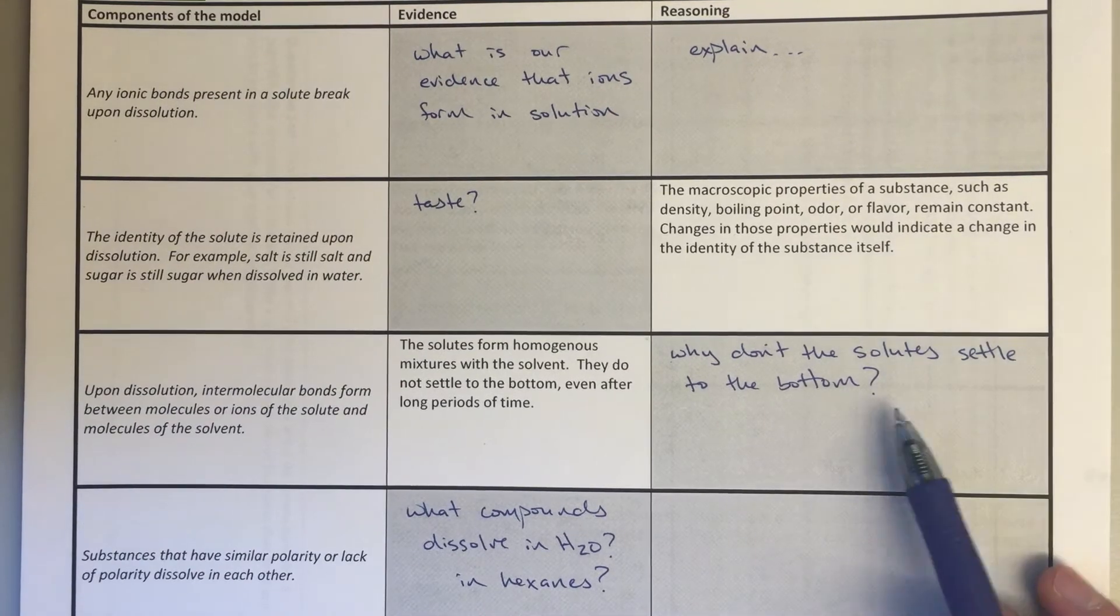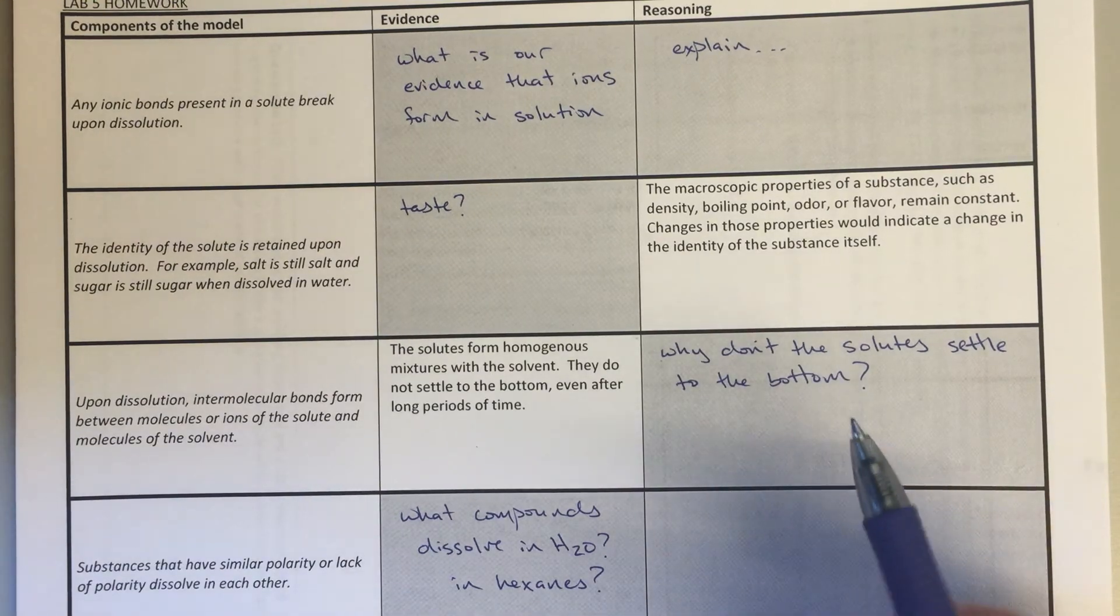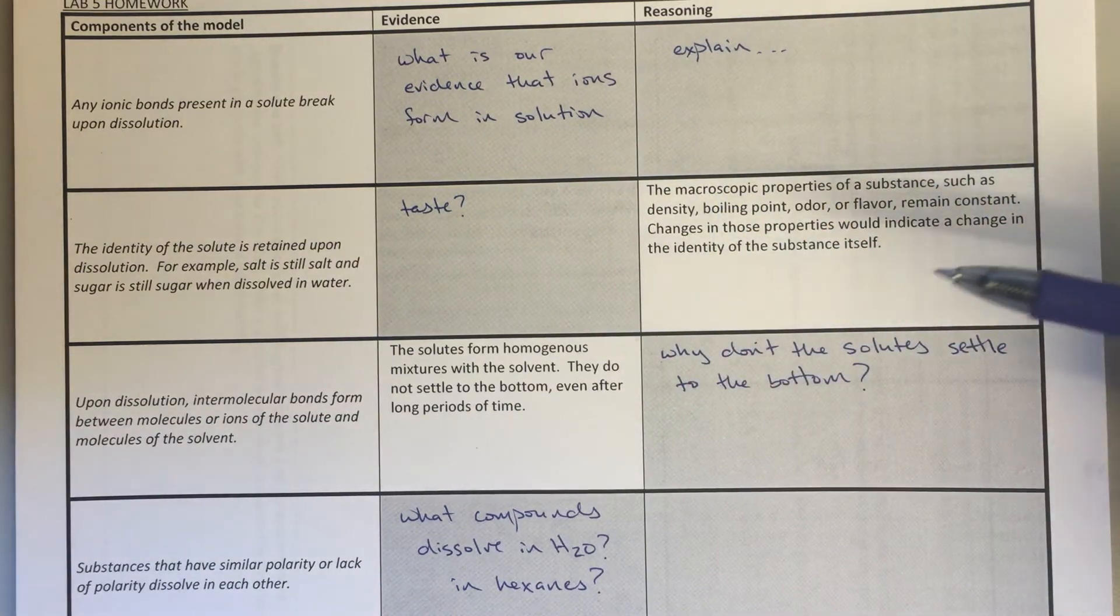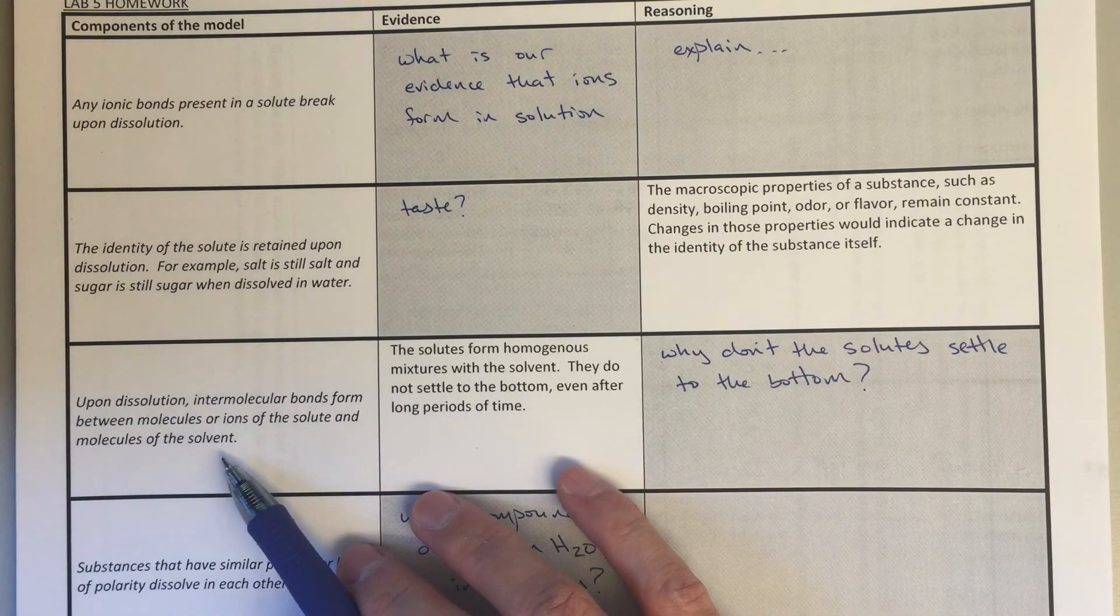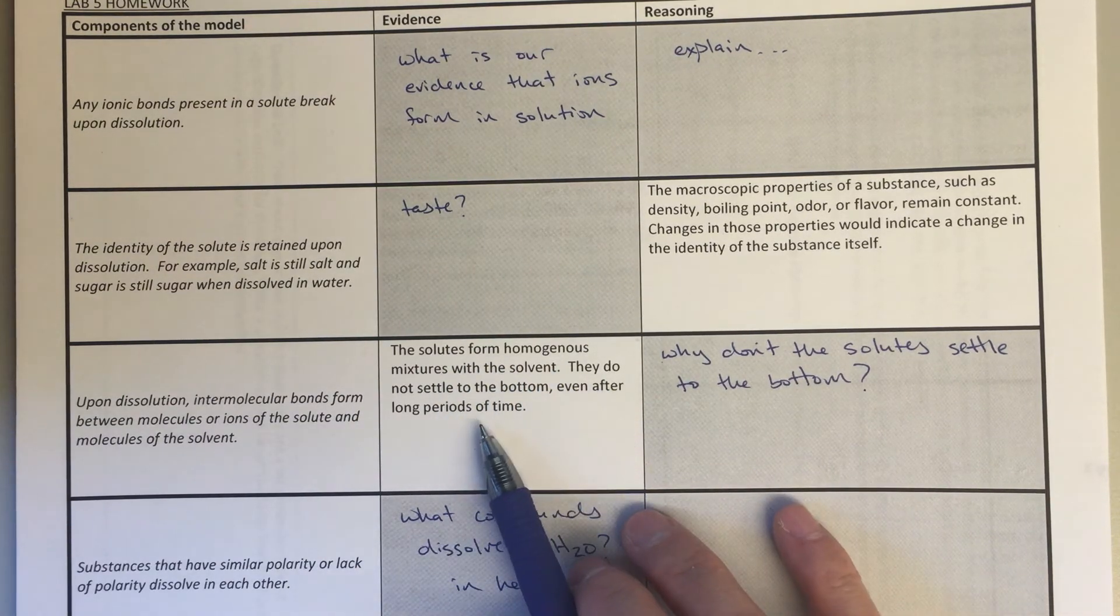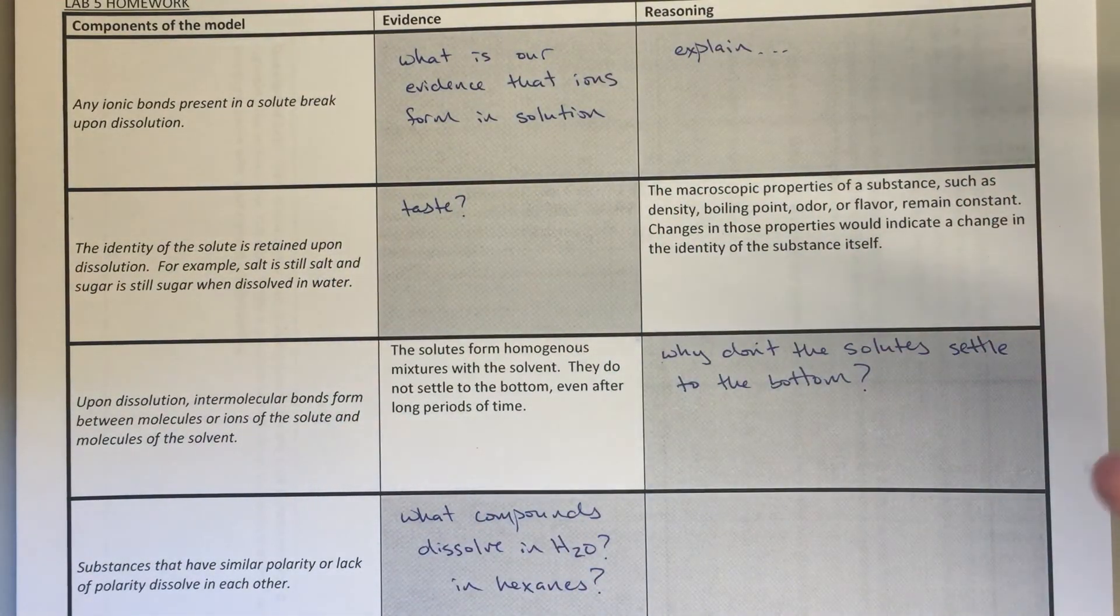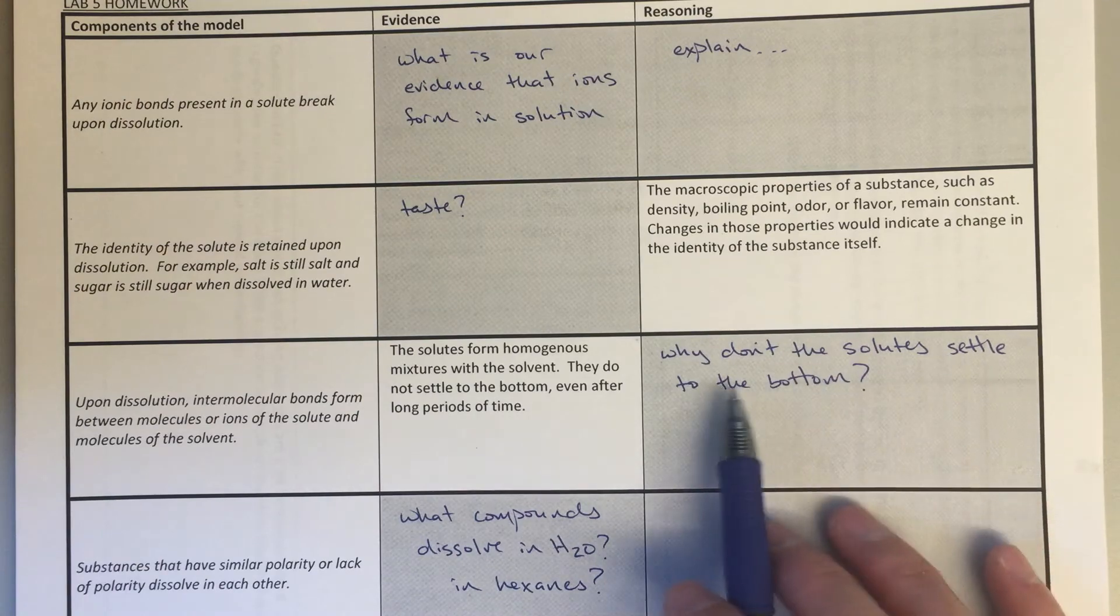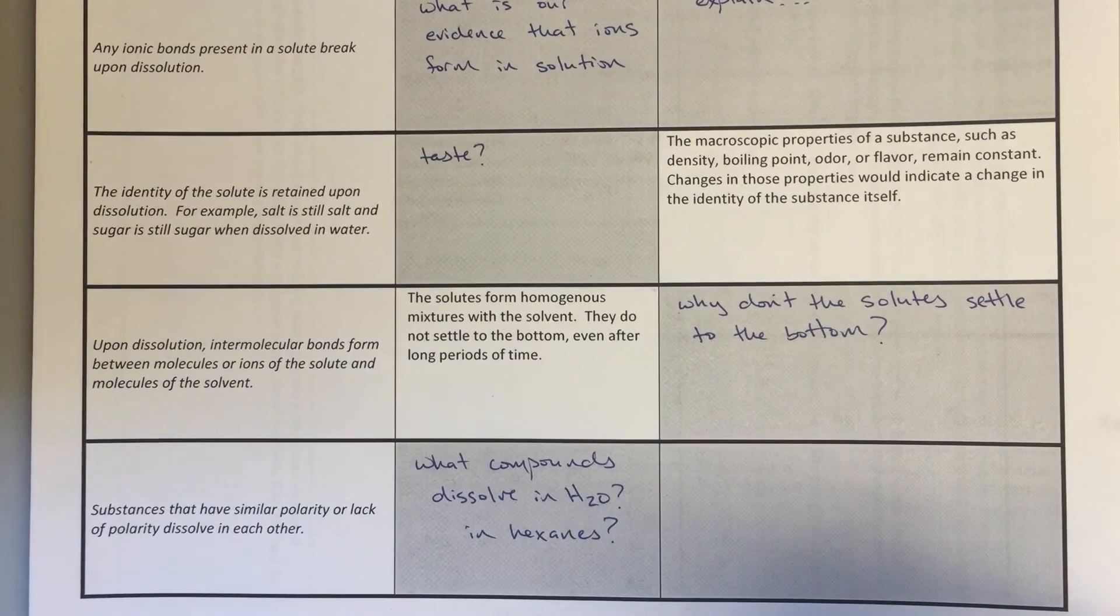For the third box here, we're really starting to talk about those intermolecular forces between our solute, which would be our salt, and the solvent, which would be water. So it says, 'Upon dissolution, intermolecular bonds form between molecules or ions of the solute and molecules of the solvent.' And the evidence is that the solutes form homogeneous mixtures with the solvent—they do not settle to the bottom even after long periods of time. That sort of suggests that those solute particles, they're floating around in the solution, they're sort of suspended in the solution. We want you to sort of explain what's going on—why are those solutes not settling to the bottom, what's holding them up, what are they interacting with, how are they interacting with the water?